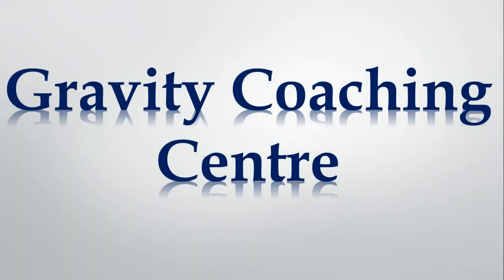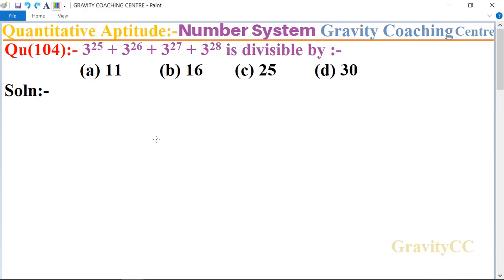Welcome to our channel Gravity Coaching Centre, Quantitative Aptitude, chapter Number System, question number 104. 3 to the power 25 plus 3 to the power 26 plus 3 to the power 27 plus 3 to the power 28 is divisible by which option?